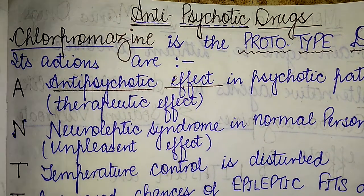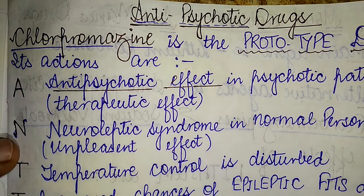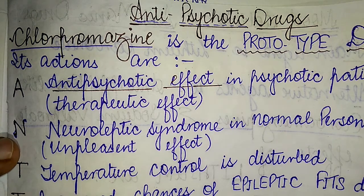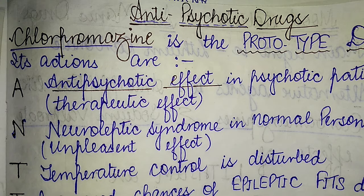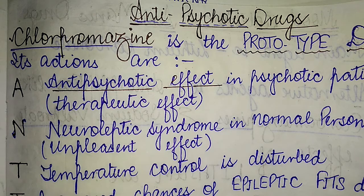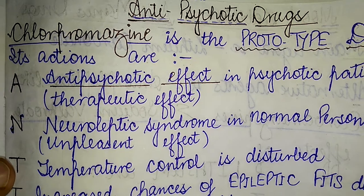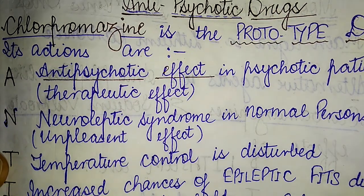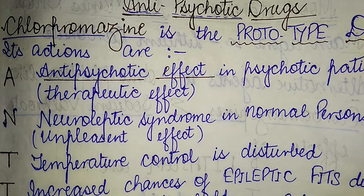The N of anti-psychotic stands for neuroleptic — it causes neuroleptic syndrome in normal patients, which has a very unpleasant effect. The T stands for temperature control being disturbed due to the use of this drug, which is an adverse effect.